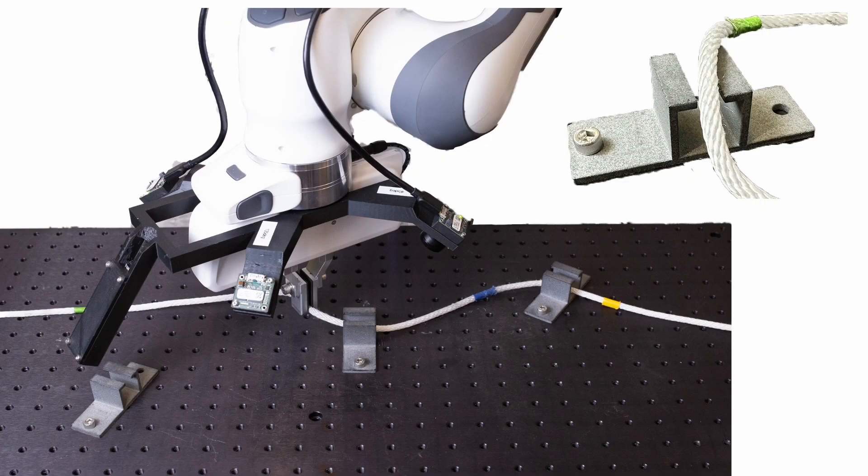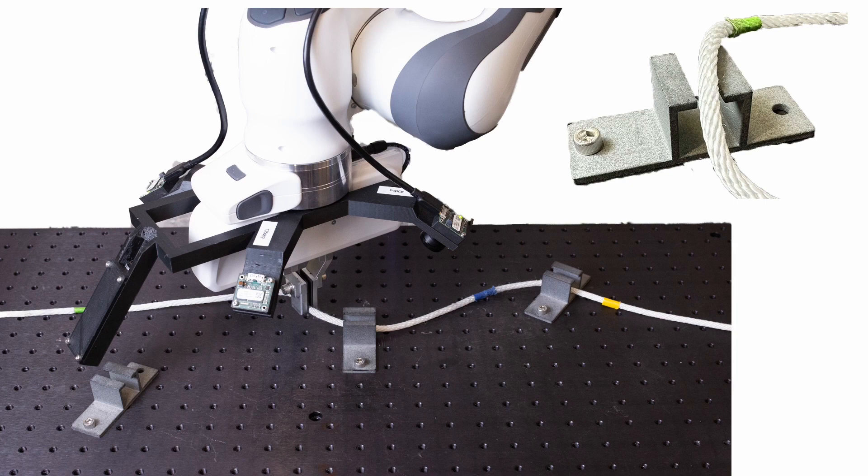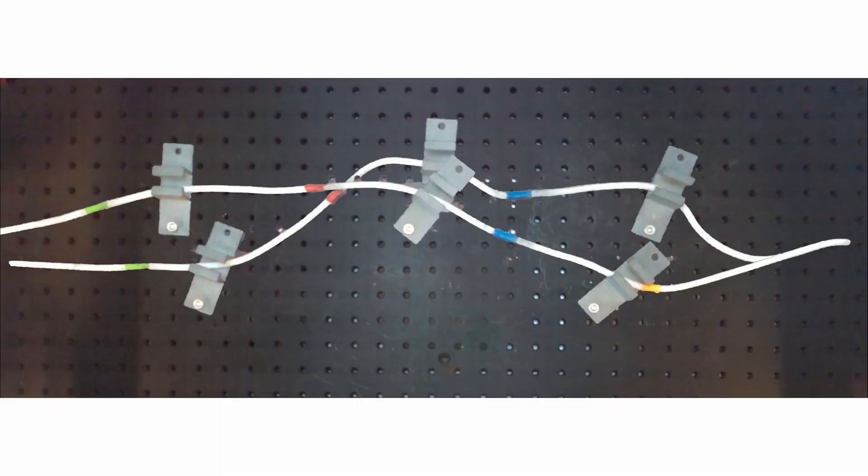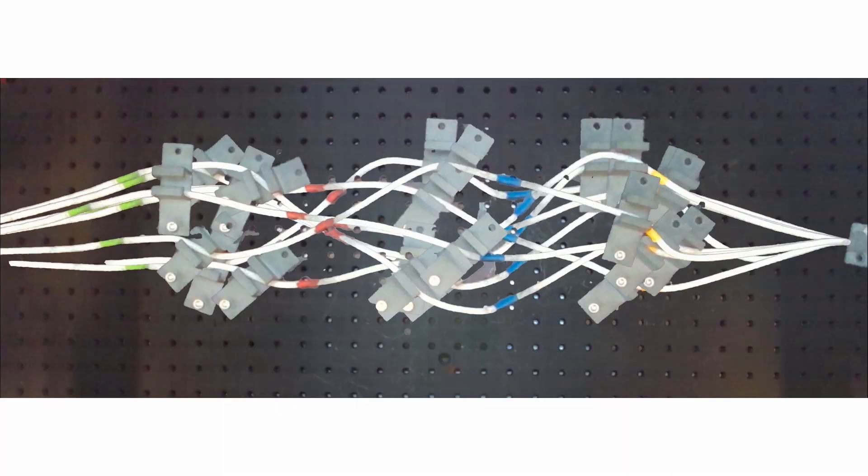In this work, we build a robotic system capable of securing a cable through an array of thin slot clips in different positions and angles, generalizing to vastly different cable shapes.